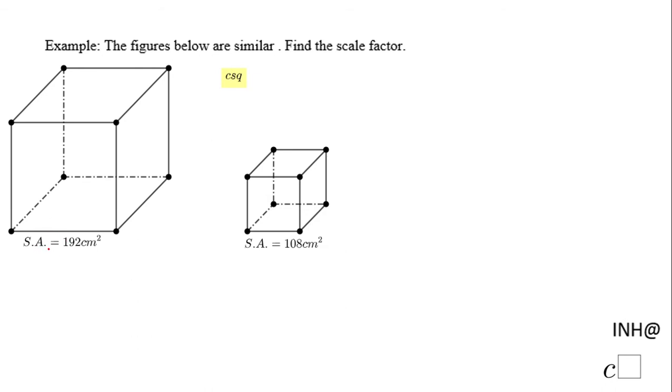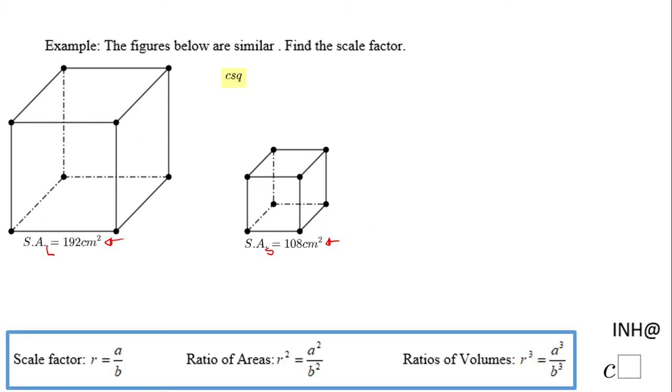We know the surface area of the largest one, which I call SA sub L, is 192 square inches, and the surface area of the small one is 108 square centimeters. For solving this problem, I'm going to use this rule you see down here, and I'm going to use the ratio of the areas.